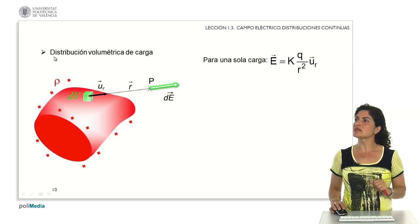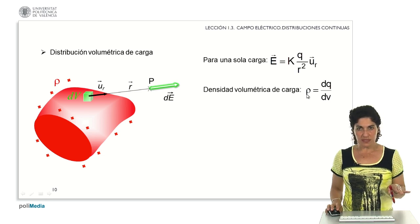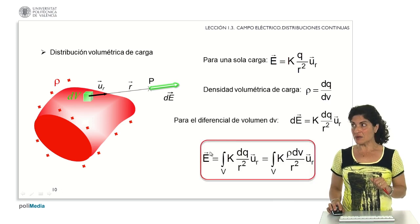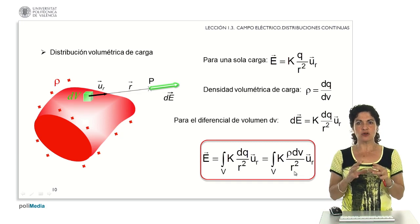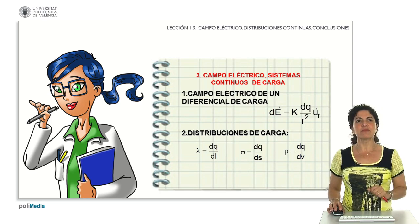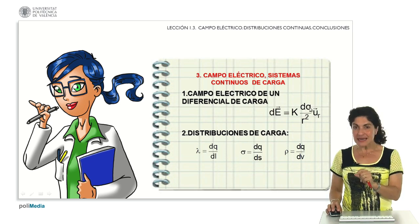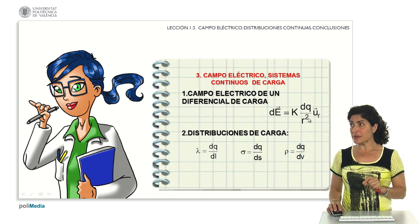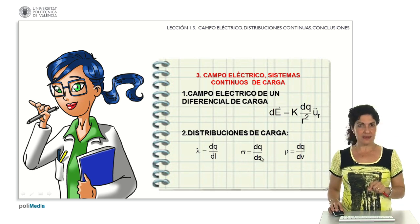Moving to three dimensions, for a volumetric charge distribution, we repeat the same steps. The key differences are that we now use volumetric densities rho and volume differentials dV, and the integral is extended to the entire volume. The algebraic scheme remains the same as before, just with the corresponding magnitudes. In summary: to analyze the field of continuous charge distributions, start from the expression for a single charge, calculate the field differential for each charge differential, and integrate — accounting for the linear, surface, or volumetric charge density as appropriate.